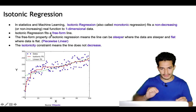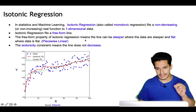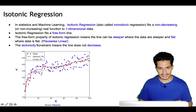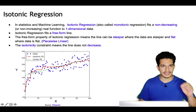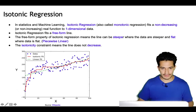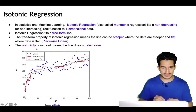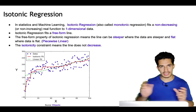Isotonic regression fits a free-form line. The free-form property means the line can be steeper when the data is steep and flat when the data is flat, as we can see in this figure. This leads to a piecewise linear line. The isotonicity constraint means the line does not decrease — it either increases or remains flat.